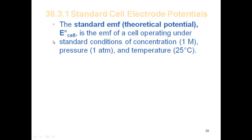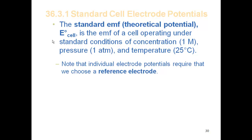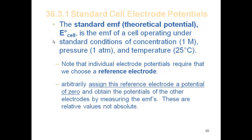The standard EMF (E°_cell), also called the theoretical potential, is the EMF of a cell operating under standard conditions: 1 M concentration, 1 atm pressure, and 25°C. This is what we calculated earlier with the zinc-copper cell at 1.10 V. Individual electrode potentials require choosing a reference electrode — by convention, we arbitrarily assign the standard hydrogen electrode a potential of zero, and all other potentials are measured relative to it.